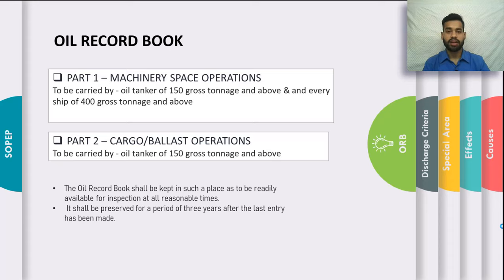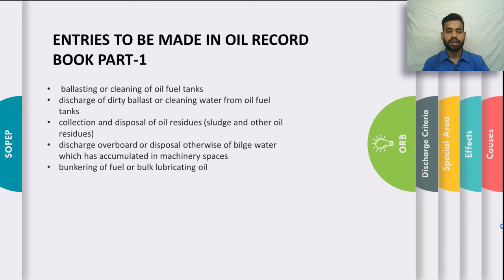Entries to be made in Oil Record Book Part 1 include: ballasting or cleaning of oil fuel tanks; discharge of dirty or cleaning water from oil fuel tanks; collection and disposal of residues, sludge, and oil residues; discharge overboard of bilge water accumulated in machinery spaces; and bunkering of fuel oil or bulk lubricating oil.